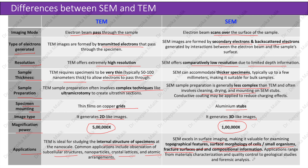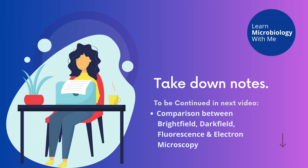With this, we complete the topic of electron microscopy. In the next session, we will discuss the differences between bright field, dark field, fluorescence, and electron microscopy.